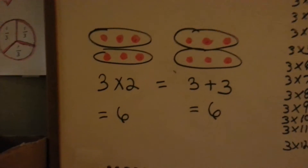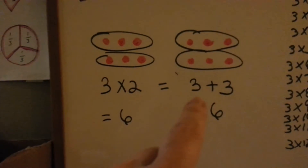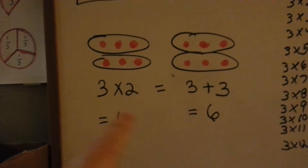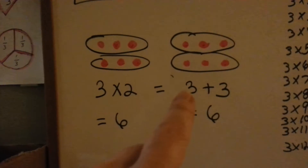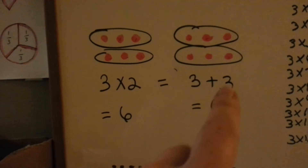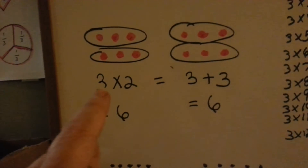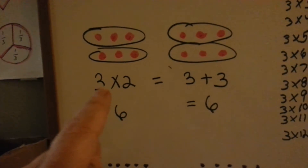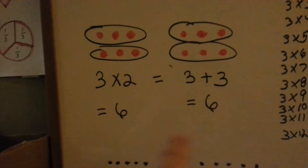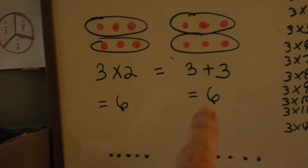When you multiply by 3, you're saying how many times am I going to add a 3 together? 3 times 2 is 3 plus 3. You have two 3's — that's how many times you're going to add a 3 together. You're going to do it 2 times: 1, 2. So 3 times 2 is 6, and 3 plus 3 is 6.